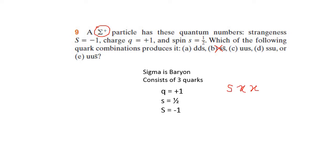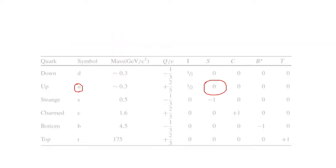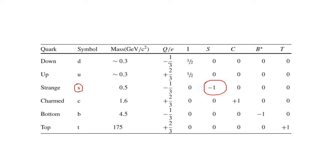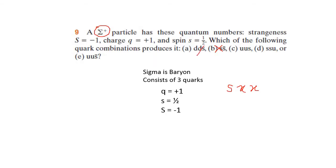The next thing to consider is the charge. When you add all of the charges it must become positive 1. So it is impossible for the remaining quarks to be negatively charged because you want the final answer to be positive. The down quark and the bottom quark are therefore impossible. A strange quark is possible because the strangeness is already accounted for. So what's left are up, charm, and top quarks — down is impossible.